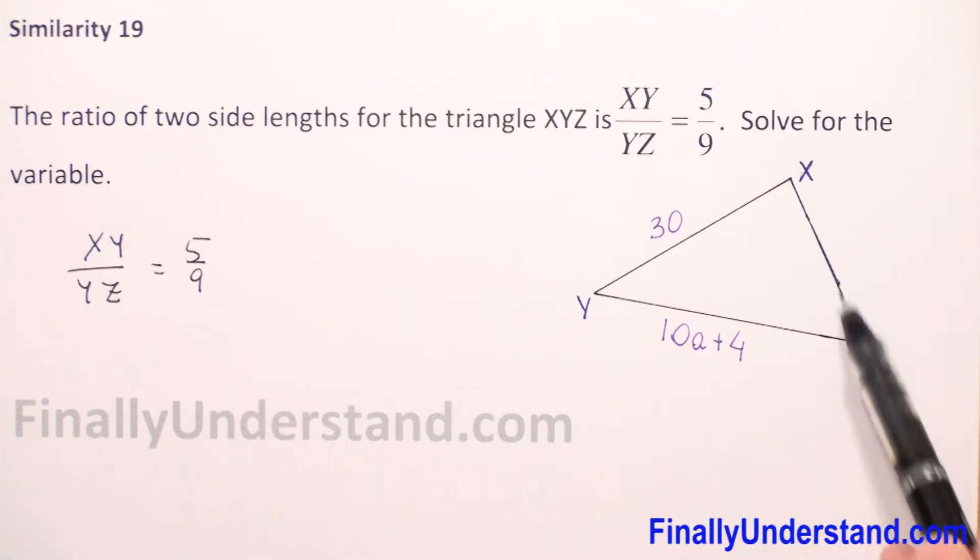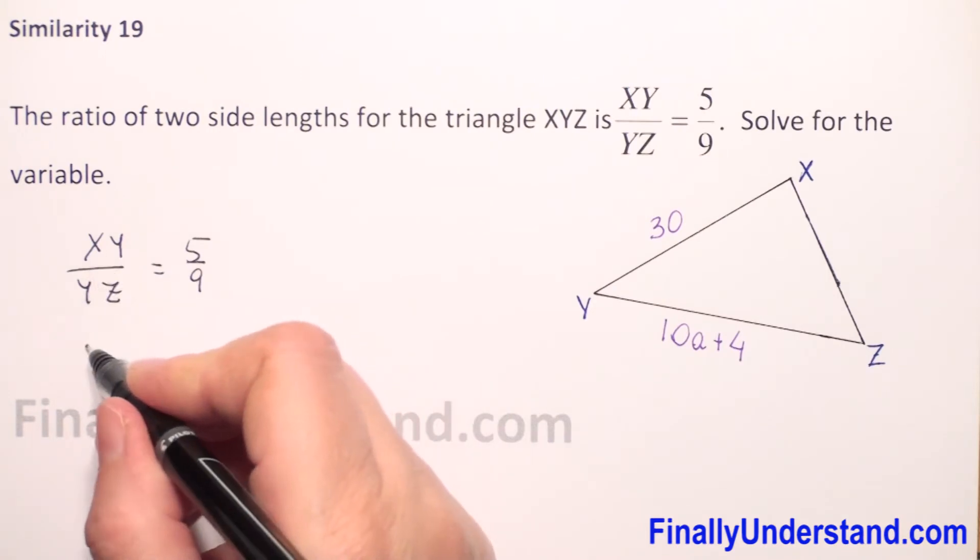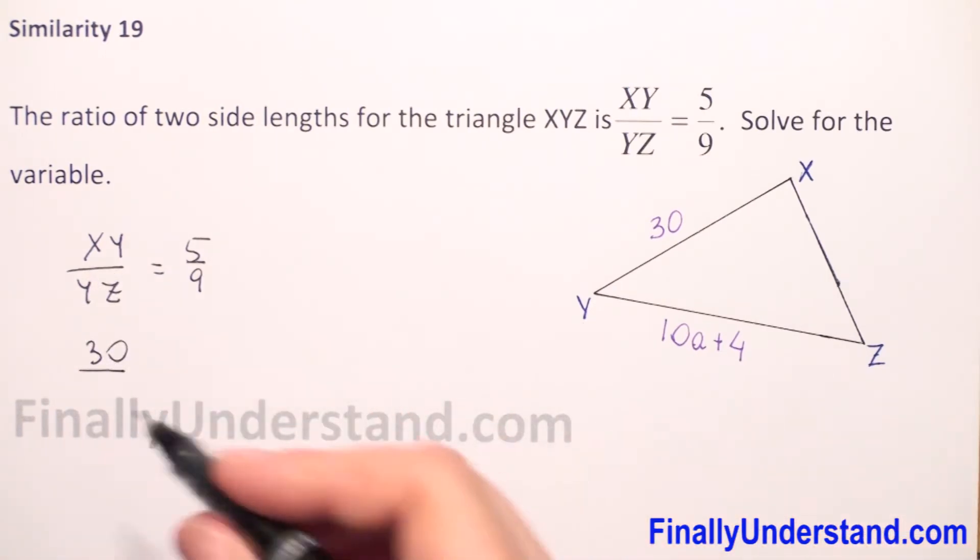From our graph, we see that XY is 30, so we substitute XY by 30, and YZ is 10a plus 4.